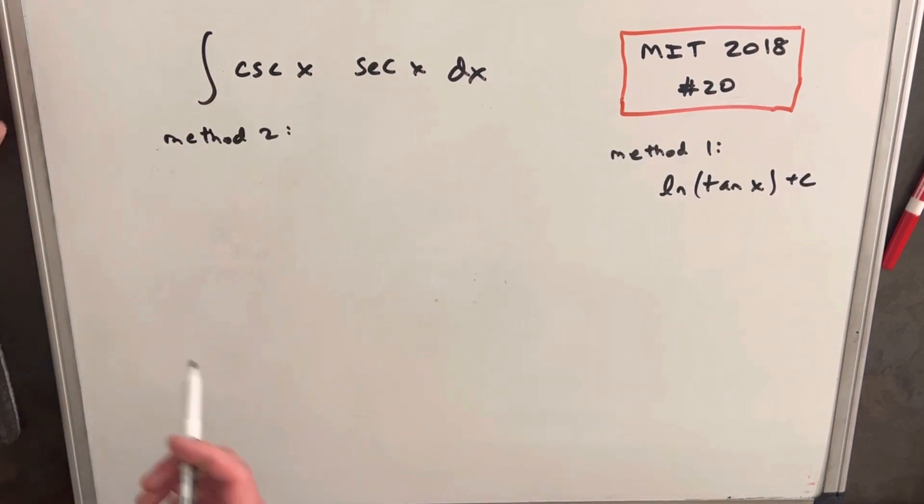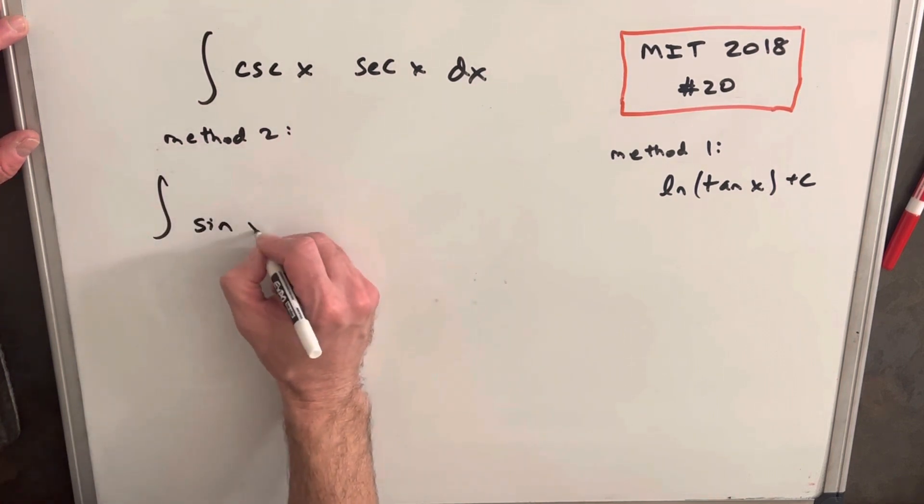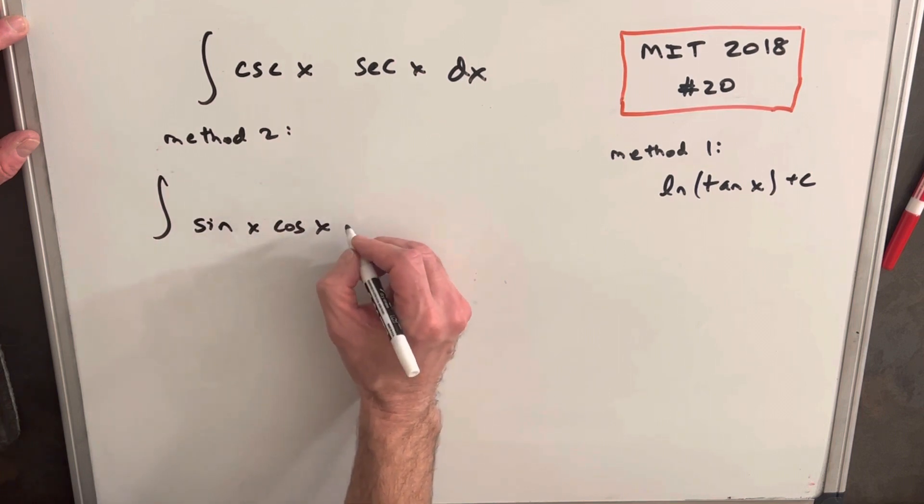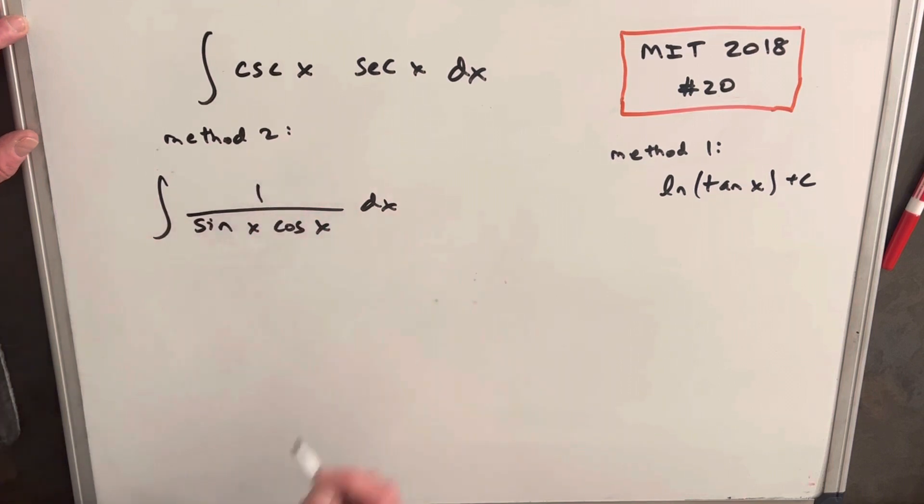Okay, so that was method 1, so then on to method 2. I'm going to do the same thing I did in the first one, where we're going to rewrite this in terms of sines and cosines in the denominator. And then we have this 1 here.